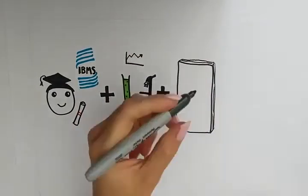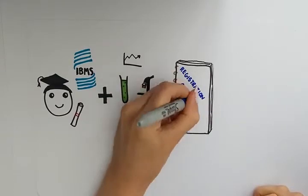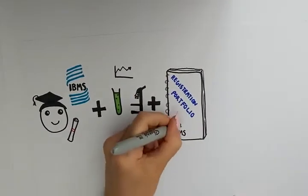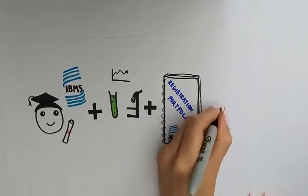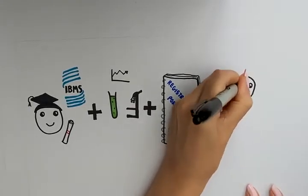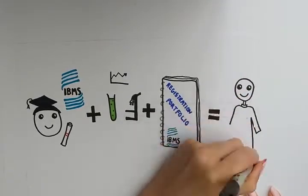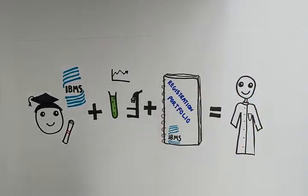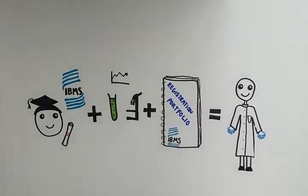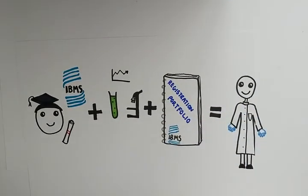Both a degree in biomedical science and a complete registration portfolio will allow you to register with the Health and Care Professions Council to become a registered biomedical scientist. This registration is really important as it shows that you are practicing correctly and that your work is of high quality.